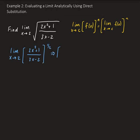So this is the same as taking the limit as x approaches 2 of 2x squared plus 1 divided by 3x minus 2, and all this is raised to the power of 1/2.